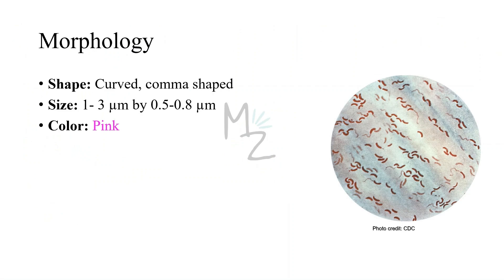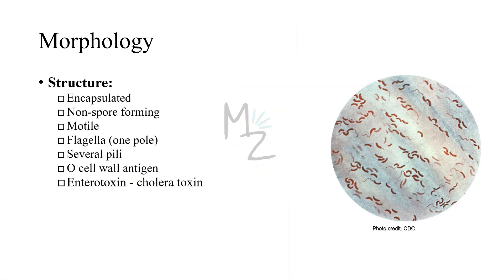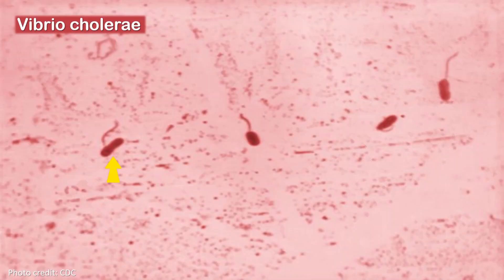Morphology. Vibrios are curved, comma-shaped gram-negative rods, as you can see in this microscopic picture. They vary in size from 1 to 3 micrometers by 0.5 to 0.8 micrometers. It's a pink-colored bacterium due to its gram-negative structure. It's an encapsulated bacterium with a cell wall. We talked about the O cell wall antigen in the introduction. It is non-spore-forming. It is motile due to a flagellum at its one pole. It has several pili all over its body, which help it attach to host cell surfaces. It also produces an enterotoxin — that's the cholera toxin, or choleragin.